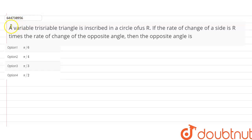The question says that a variable triangle is inscribed in a circle of radius R. If the rate of change of a side is R times the rate of change of the opposite angle, then find the opposite angle.